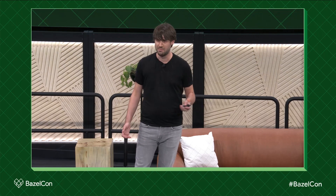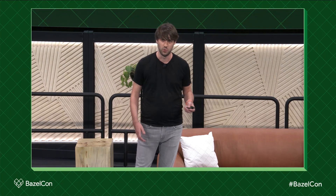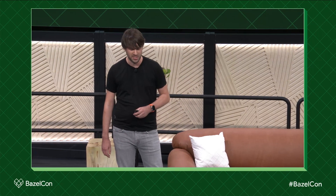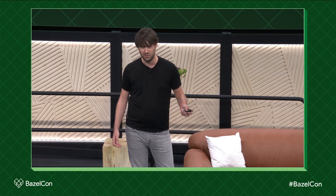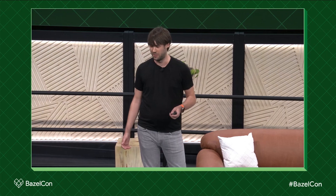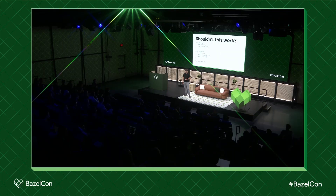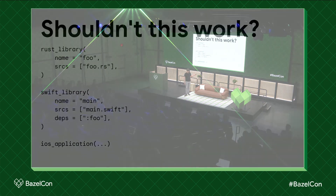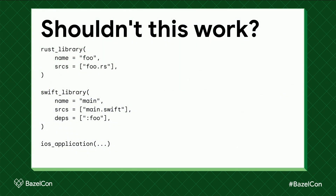If you've used Rust in Bazel, you know about rules_rust, which is a really great ruleset for building Rust in general, and it supports a bunch of stuff. So you might wonder, shouldn't this kind of example just work? If you swapped this Rust library for a CC library and you threw in a C source, it would just work. So what's going on here?